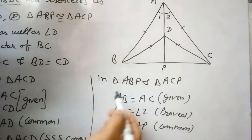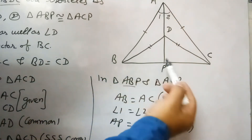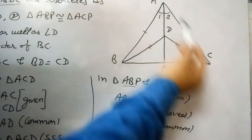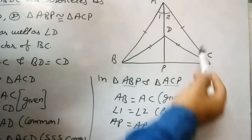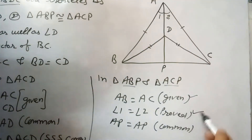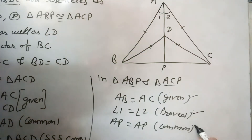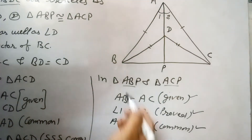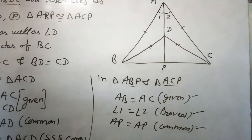For the second case, in triangles ABP and ACP: AB equals AC, which is given. Angle 1 equals angle 2, which we have proved, and AP is common to both triangles. Therefore these two triangles are also congruent by Side-Angle-Side congruency.